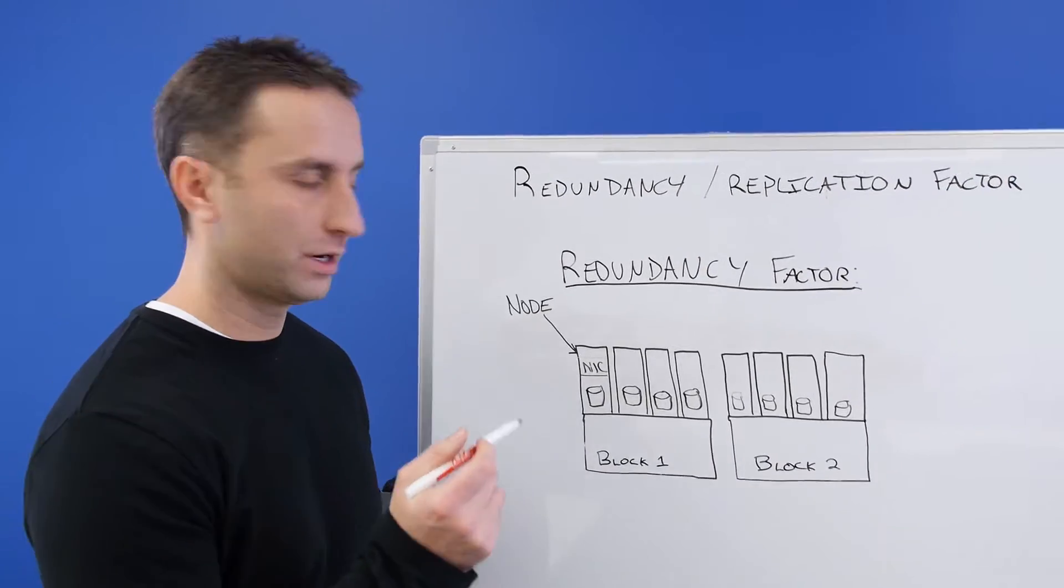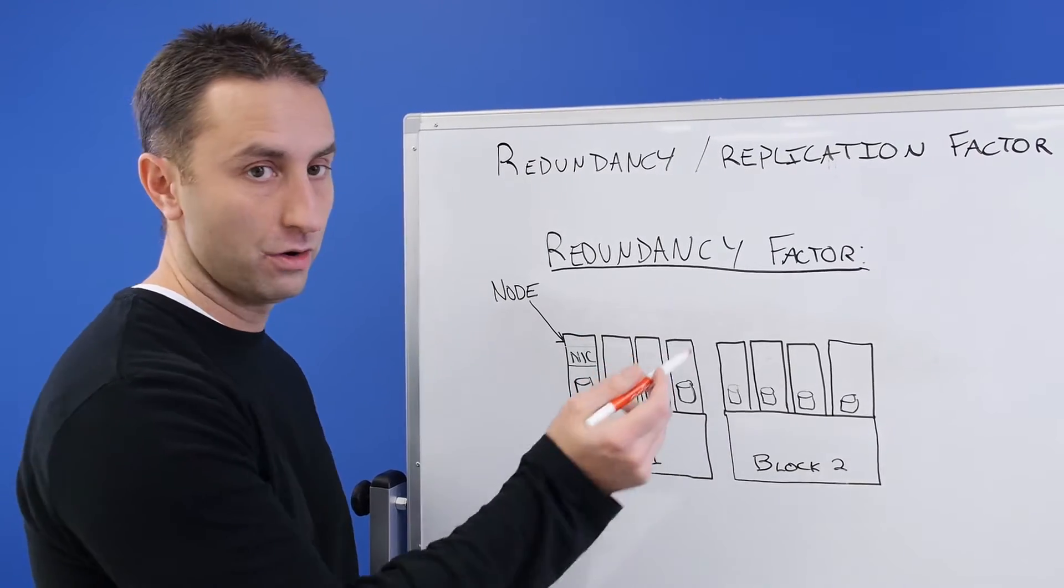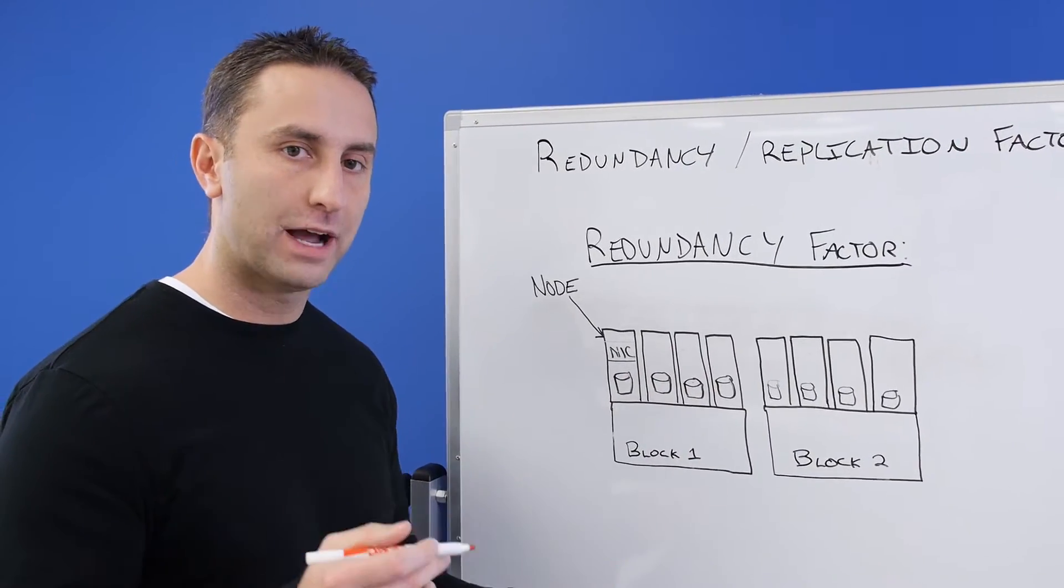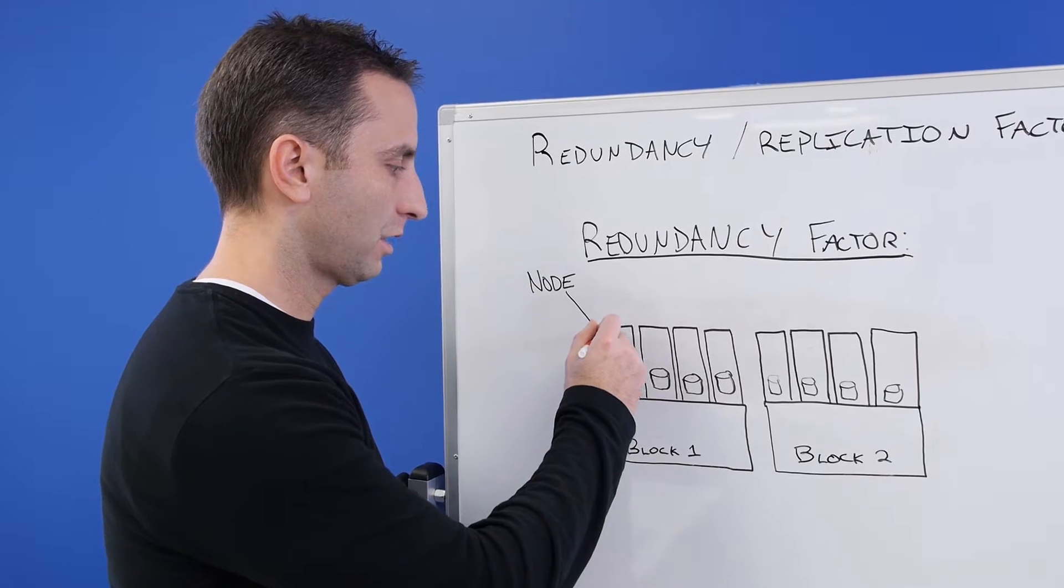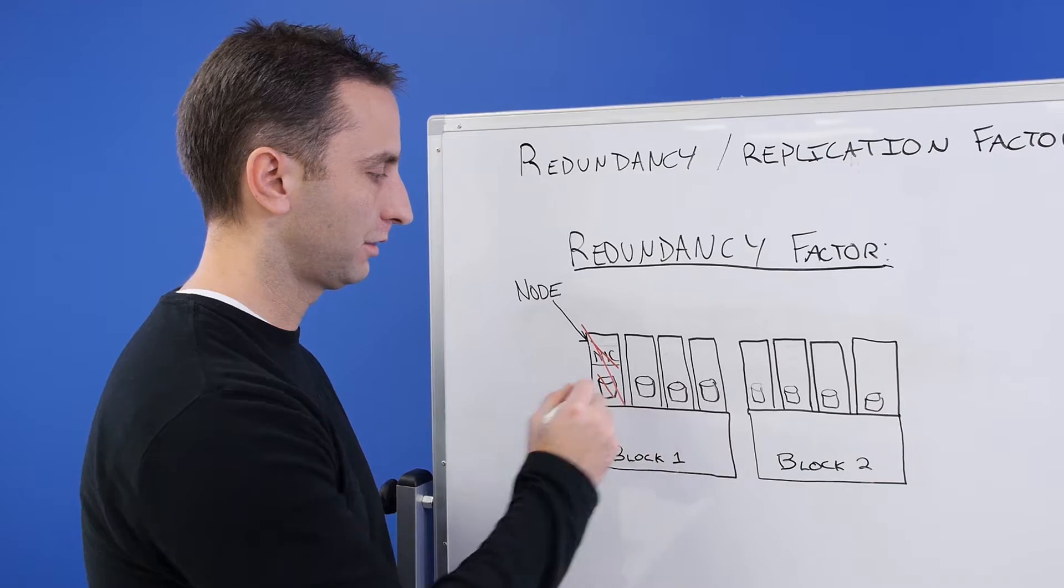Let's look at what we have on the board here. We're showing components as being either NICs, discs, or nodes. So if we had a redundancy factor of two, you could have a NIC go offline, a single disc go offline, or an entire node go offline.